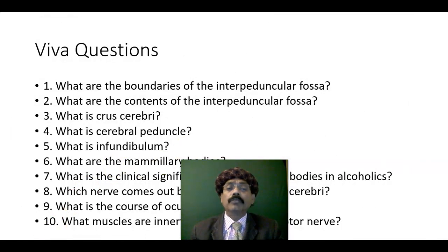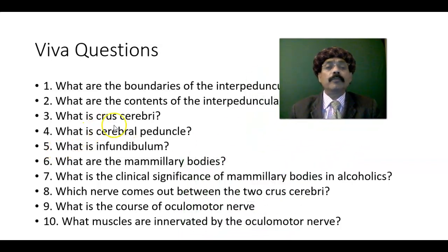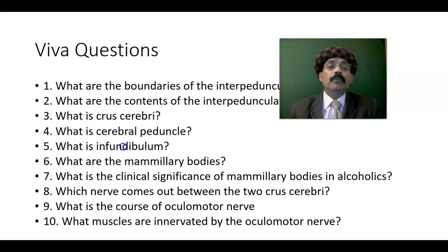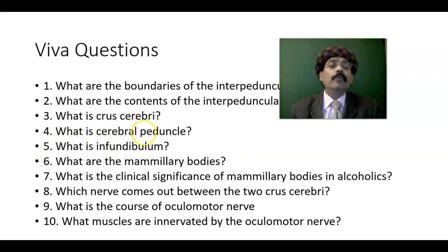For viva questions: the boundary of the interpeduncular fossa contains the crus cerebri, which is part of the midbrain. The cerebral peduncle is composed of the crus cerebri, substantia nigra, and the tegmentum. The infundibulum is the connection of the hypothalamus to the pituitary gland through the tuber cinereum. The tuber cinereum is the part of the hypothalamus composed of gray matter extending from the infundibulum to the mammillary body area. The infundibulum is the pituitary stalk, and it is related to the hypothalamus as well as the tuber cinereum.